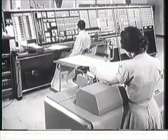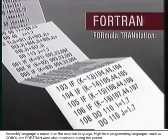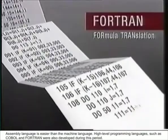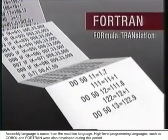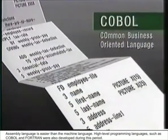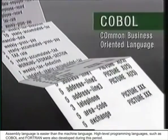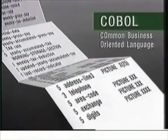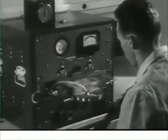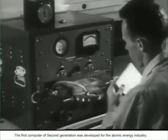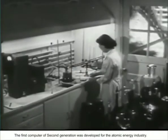The first computer of the second generation was developed for the atomic energy industry. Physical appearance: transistors are smaller in size compared to vacuum tubes, so the size of the computer was also reduced.